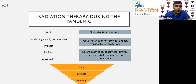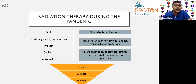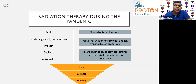Give single fraction or hypofractionated schedules if possible. Whatever needs to be done, ensure the patient is protected. Be alert to investigate symptoms with a lower threshold and make sure the patient is cared for without infecting others. The restriction of services also varies — in India, the majority of places have no to minimal restriction of services. The general rules of time, distance, and shielding are the key factors.